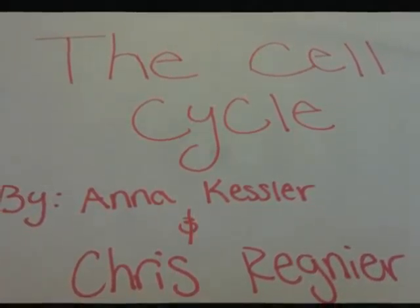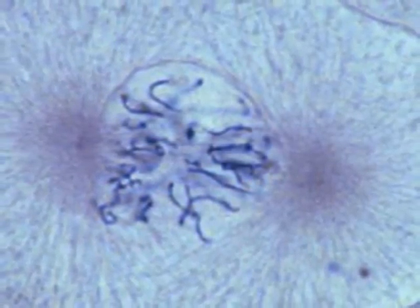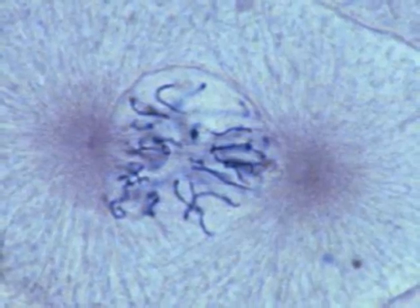The Cell Cycle by Anna Kessler and Chris Regnier. Cells pervade every aspect of life. From plants and animals to viruses and bacteria, cells are the basic unit of life.